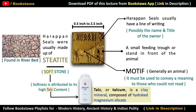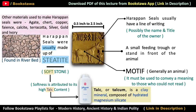The length of these seals used to be from 0.5 inches to 2.5 inches. Although they were mostly made of steatite, some seals were also made of agate, chert, copper, faience, calcite, terracotta, silver, gold and ivory.